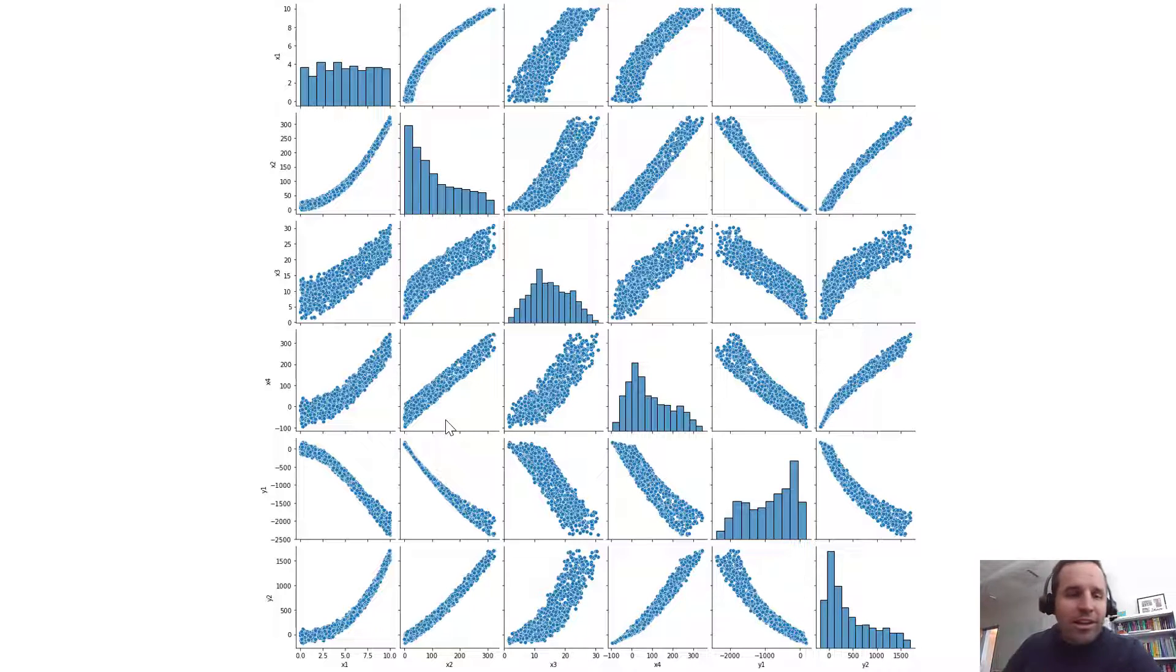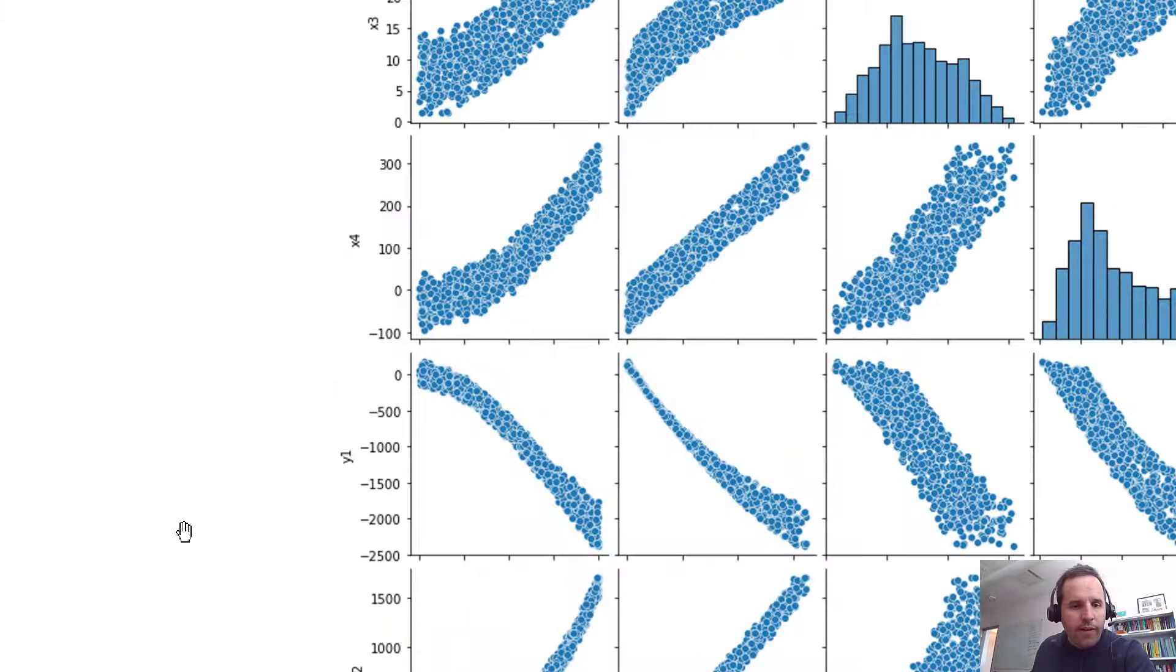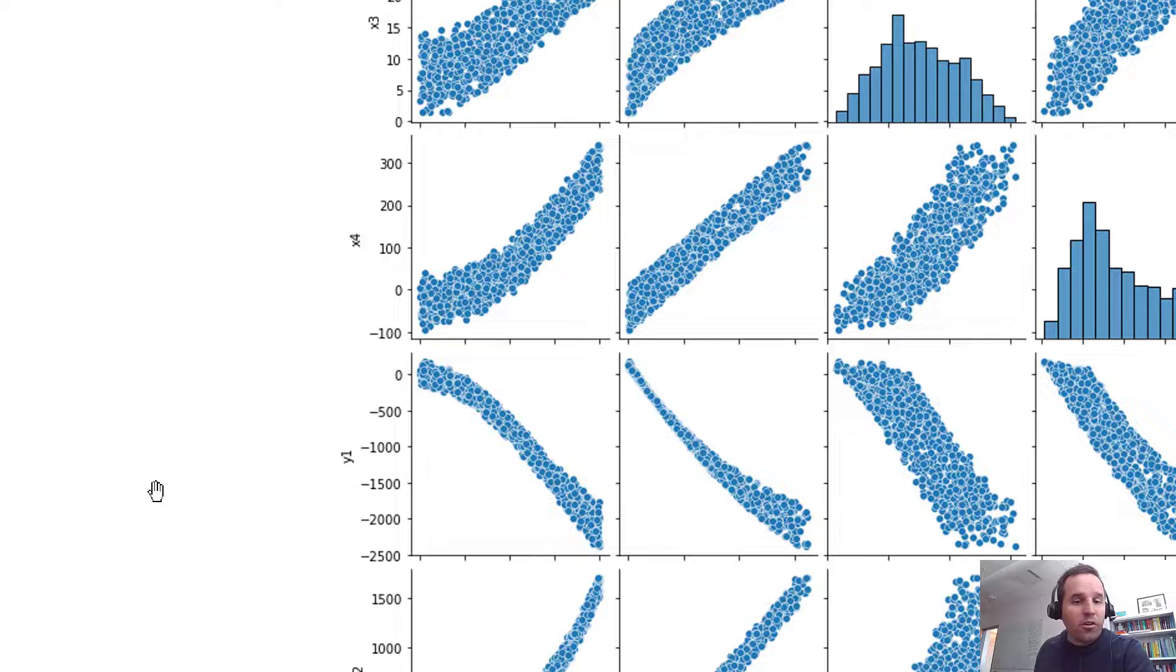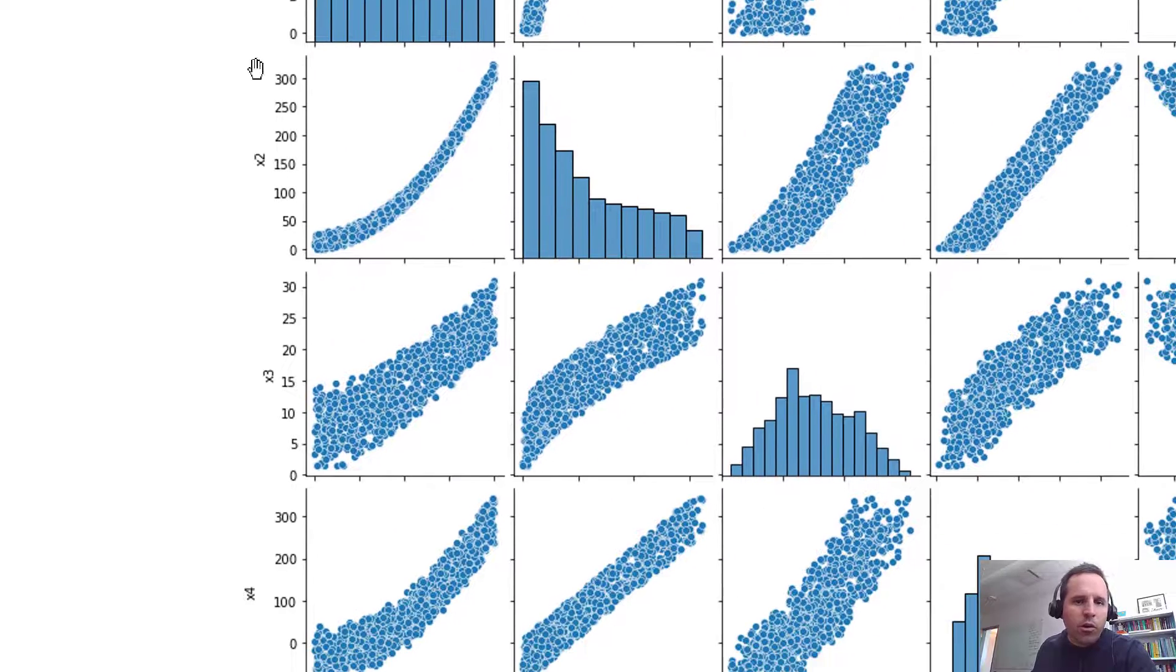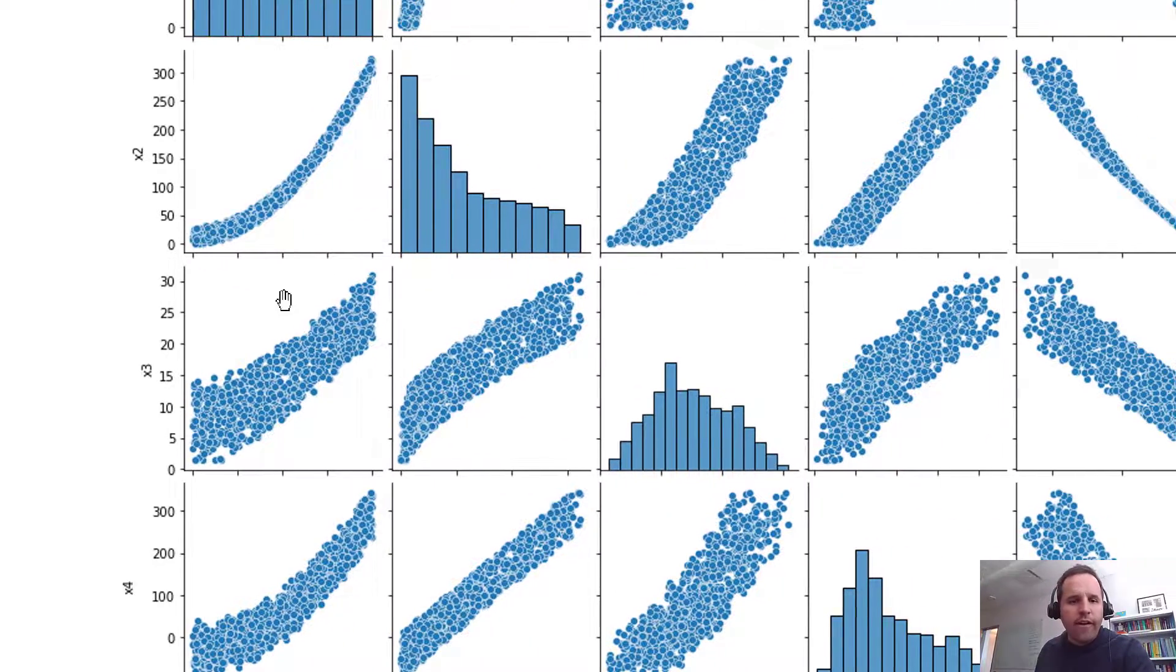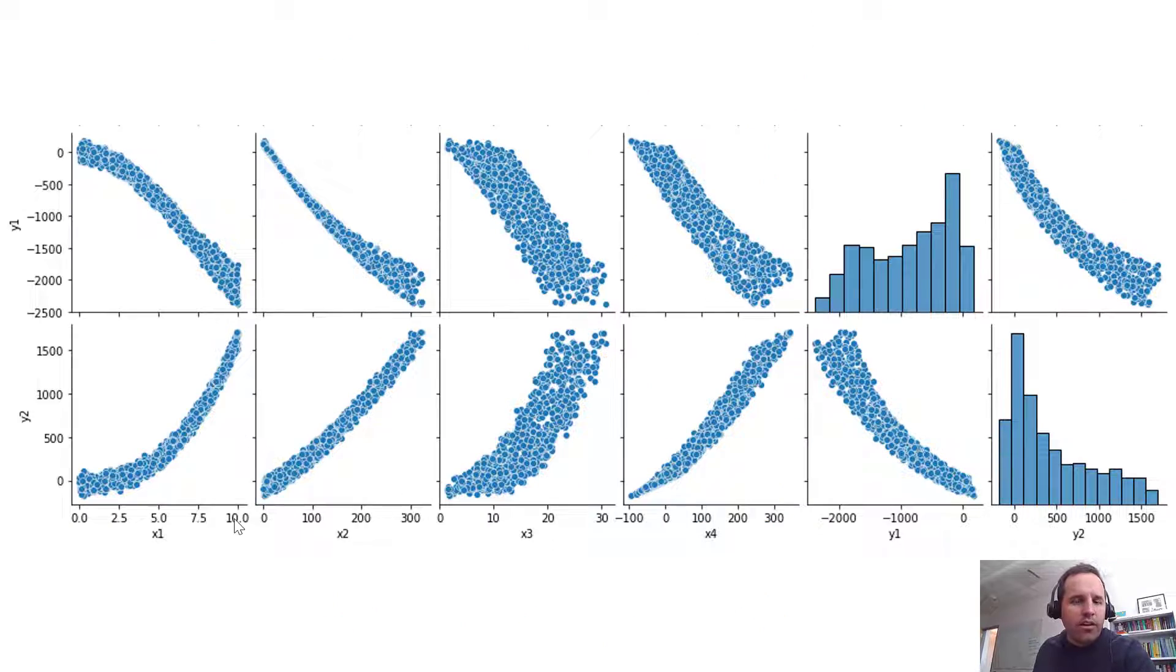We're going to be getting into developing some non-linear machine learning models using artificial neural networks. And specifically with this data set, what we will ultimately want to do is predict two outputs, Y1 and Y2, as a function of all four of our inputs. So we could zoom in on just those Y rows. Here we can look at Y2 versus all of the inputs.